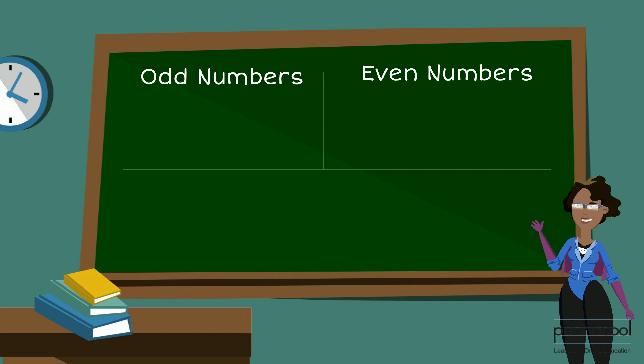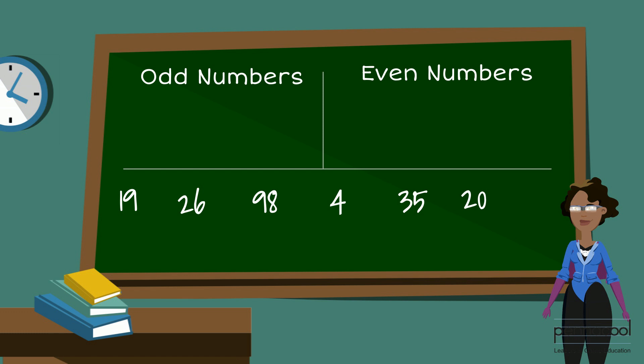Let's look at a few more examples and say whether the following numbers are odd or even. 19, 26, 98, 4, 35 and 20. Take a minute and decipher if these numbers are odd or even.